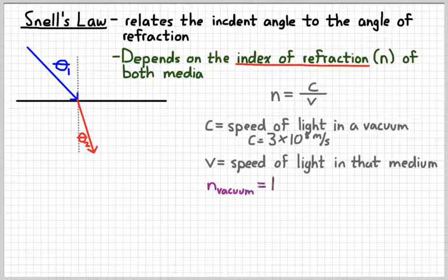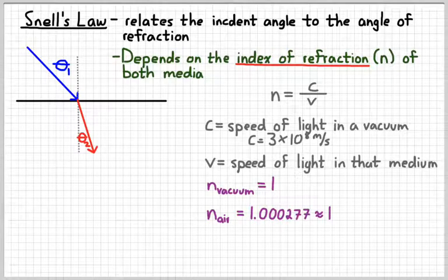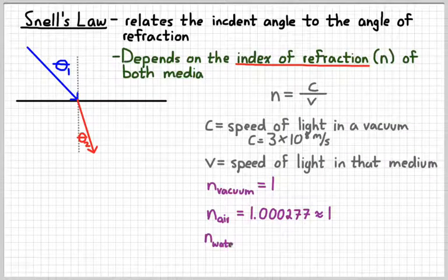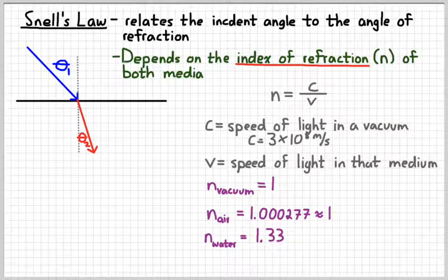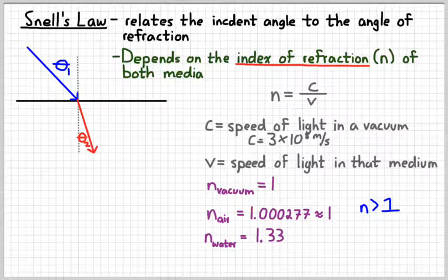So in a vacuum, the index of refraction would be one. For air, it's 1.000277, whatever, which is about one. For water, it's one and a third, essentially. N is always going to be greater than one, unless you're in a vacuum, in which case it's equal to one. The speed of light in a vacuum is the fastest possible speed. And so c is always bigger than v, so n is always greater than one.